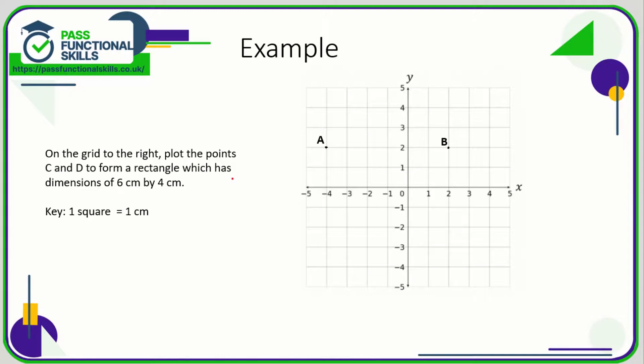Let's take a look at an example. On the grid to the right, we need to plot the points C and D to form a rectangle which has dimensions of 6 centimeters by 4 centimeters, and one square is one centimeter.